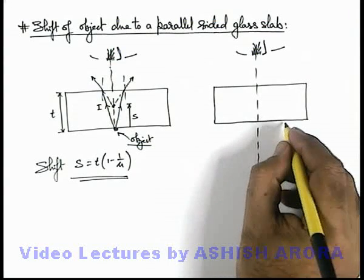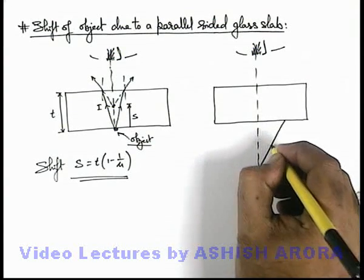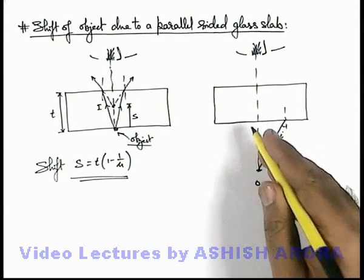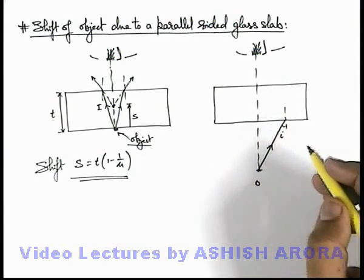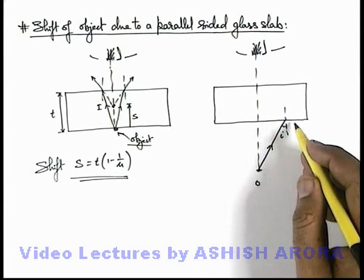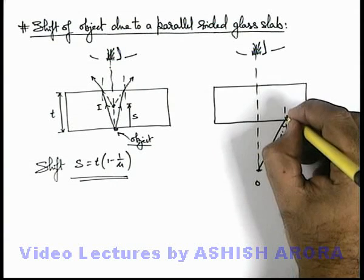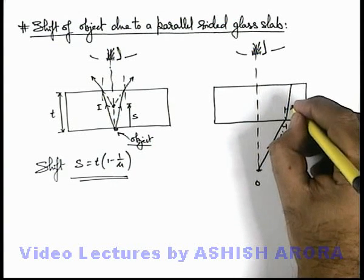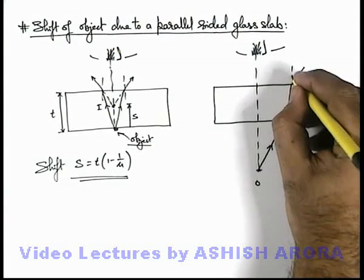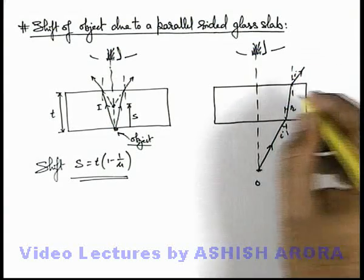Now if a light ray is incident onto it at some angle of incidence i—and here just for clarity I am drawing the ray away from normal, but we are assuming it to be near normal incidence or paraxial rays—then it will bend toward normal at angle r, and finally the light ray will come out in air at the same angle i. This we already studied.